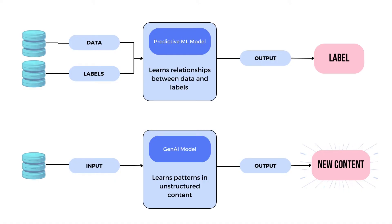We're showing two key approaches in artificial intelligence: traditional machine learning and generative artificial intelligence. The top image shows traditional machine learning. Here, the model learns from data with labels attached to it. What it does is figure out the link between the features of the data and their corresponding labels.